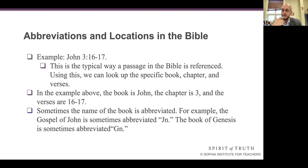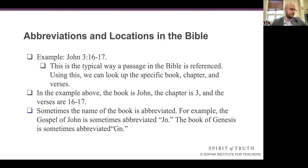Sometimes the name of the book is abbreviated, which is often the case in Bibles themselves. For example, the Gospel of John is sometimes abbreviated JN, and the book of Genesis is sometimes abbreviated GN. Now I'm going to put your knowledge to the test. Turn to pages 20 and 21 in your workbooks — I want you to go through this Bible scavenger hunt. Looking at page 21 first: label the book, chapter, and verses in the reference Matthew 28:16-20. The book is Matthew, the chapter is 28, and the verses are 16 to 20.